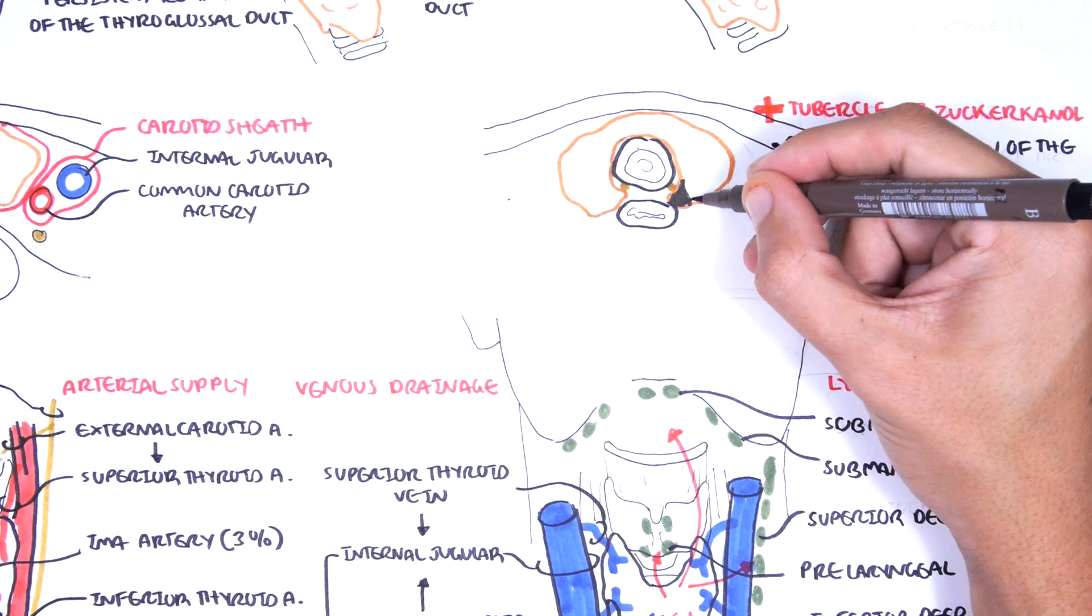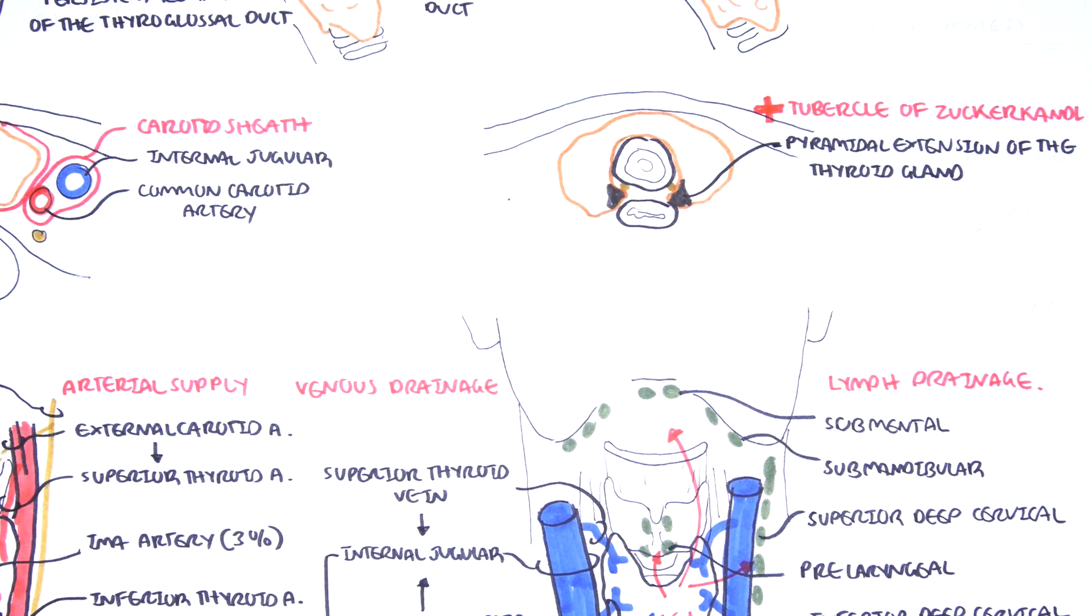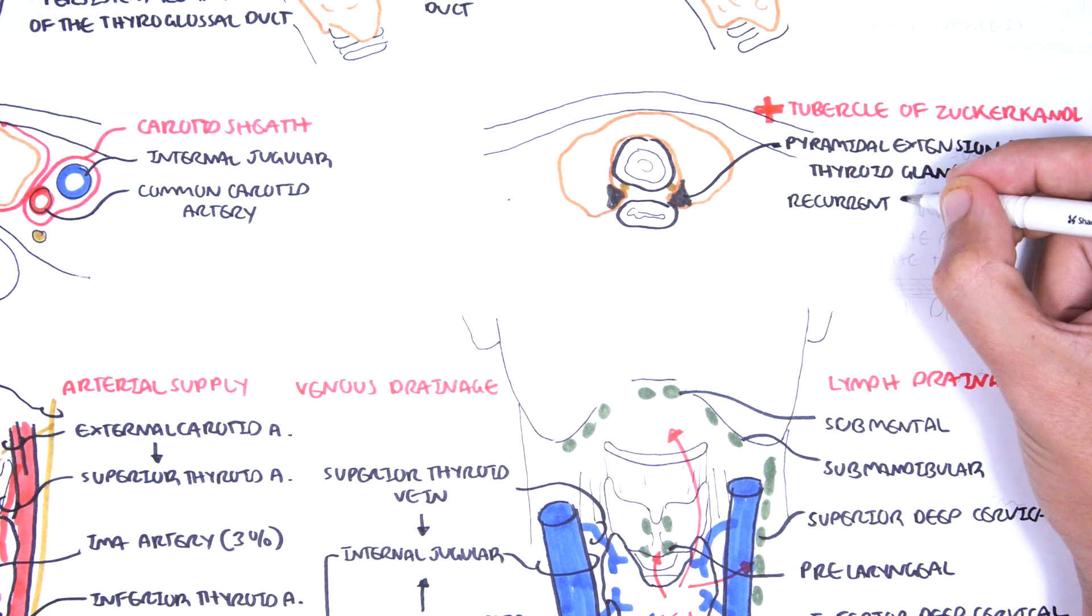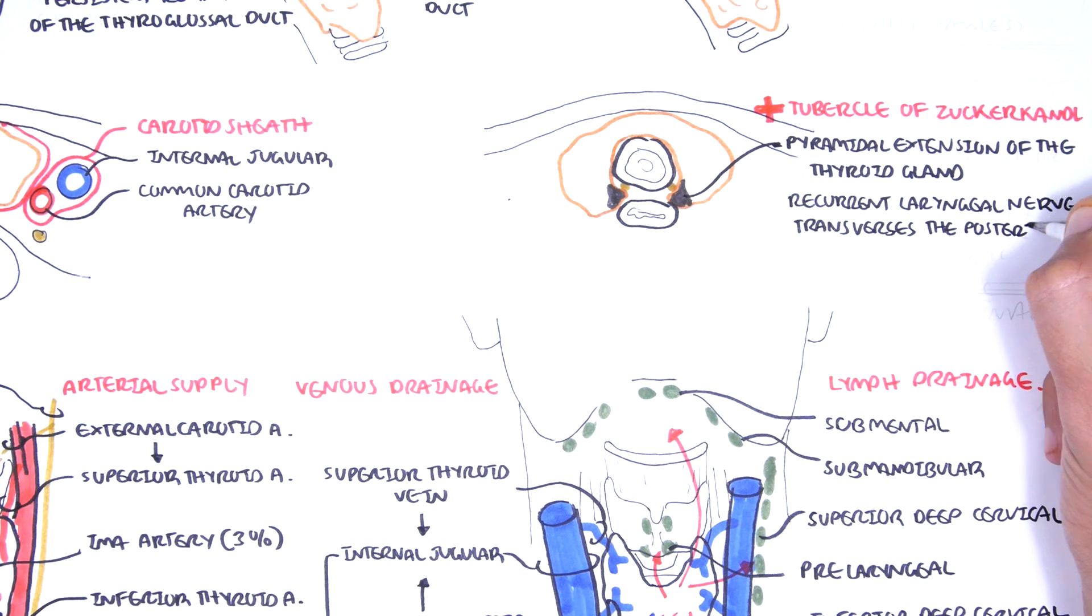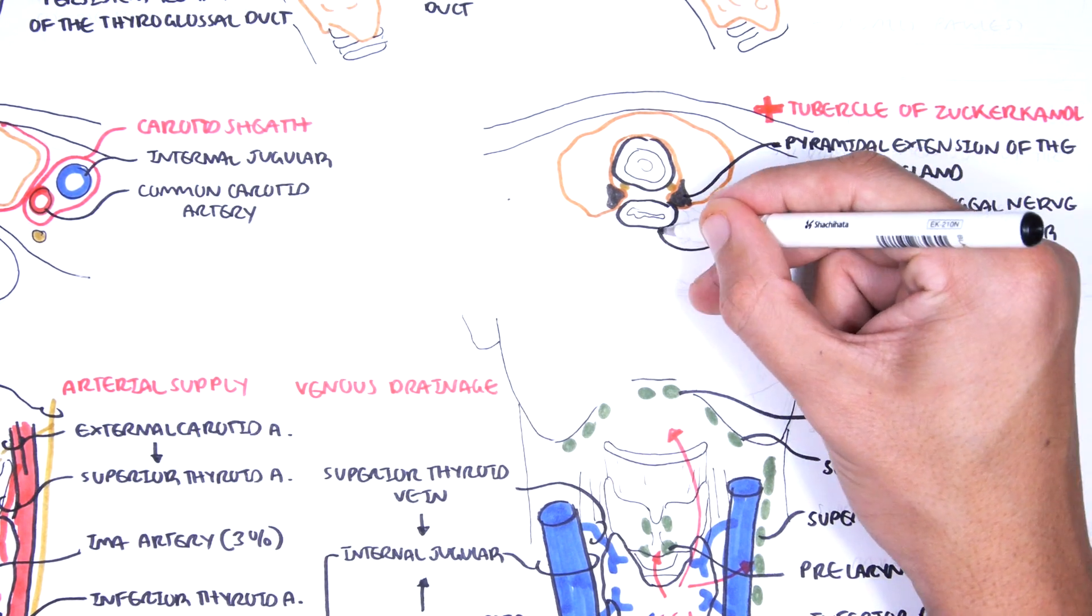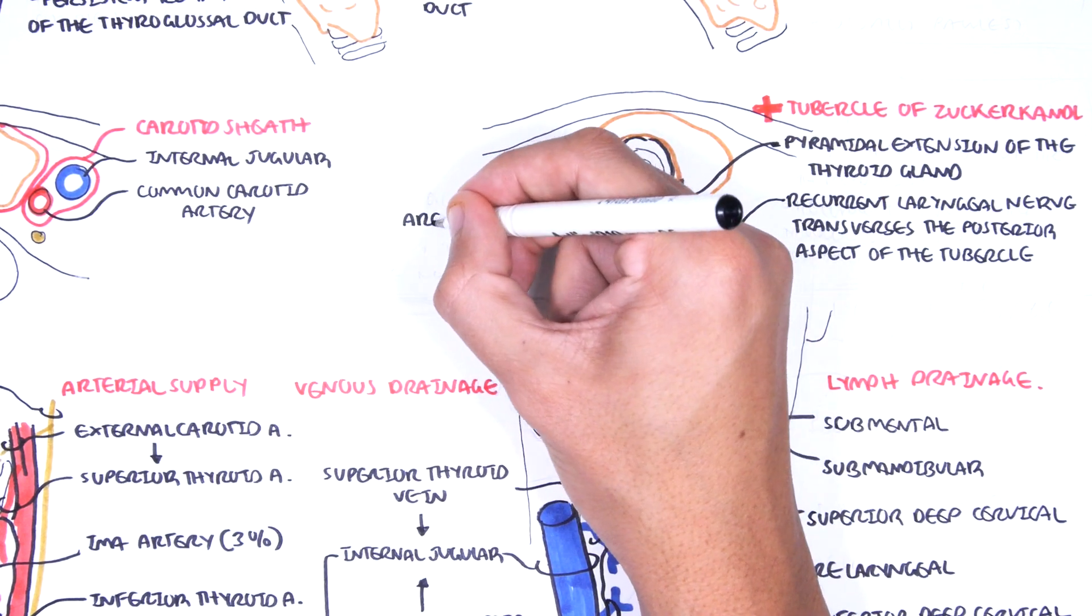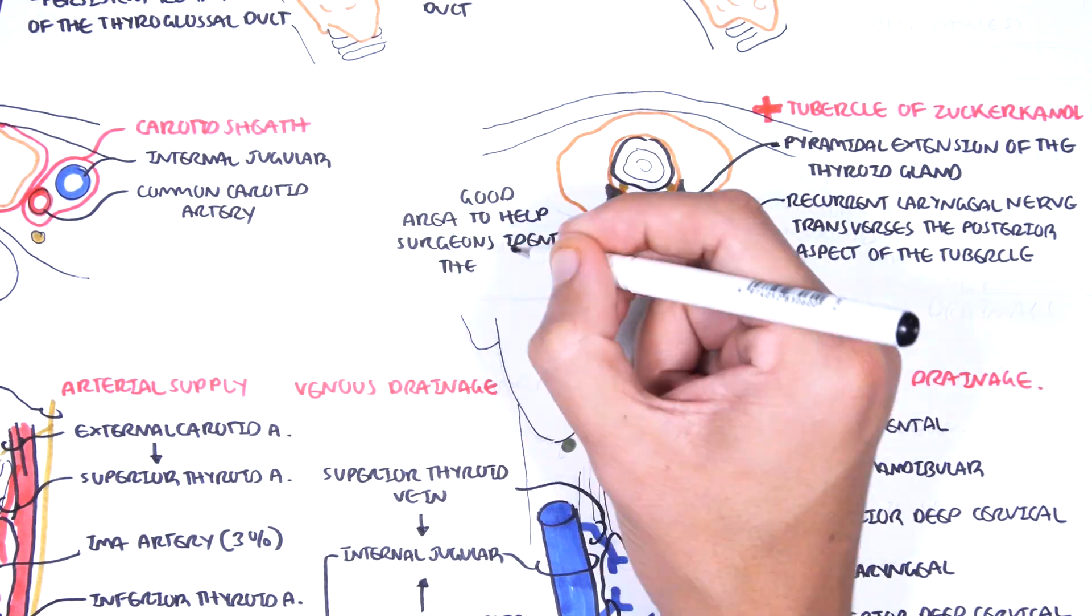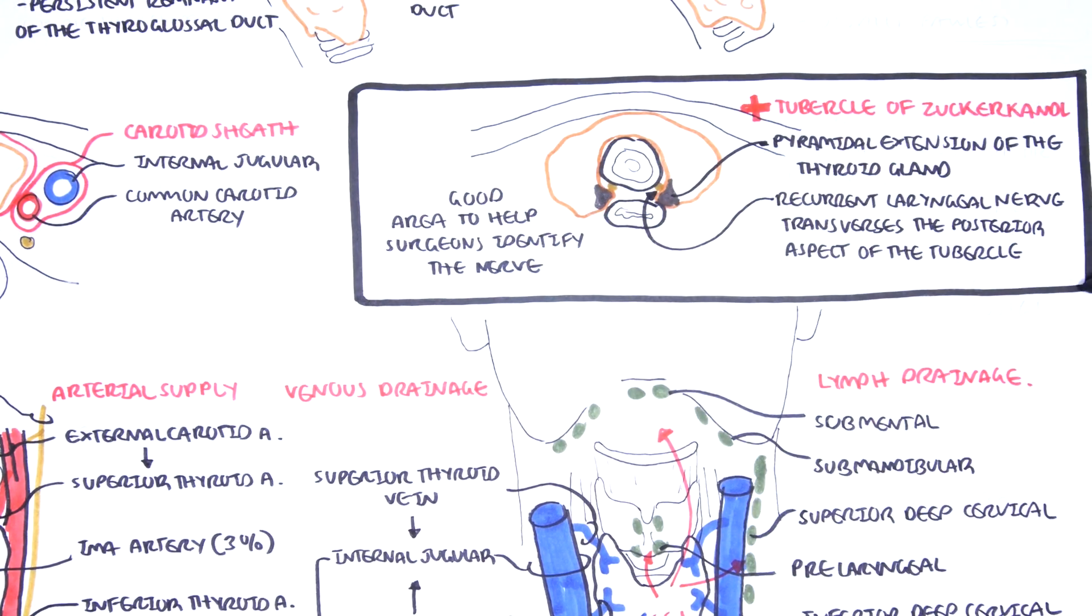It's present at the most posterior side of each lobe. The recurrent laryngeal nerves, which we talked about on the right and the left, they actually traverse the posterior aspect of the tubercle. And so this tubercle is a good area to help surgeons identify where the recurrent laryngeal nerve sits and to be careful.